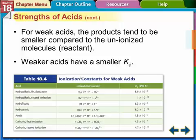So that's what I'm saying. For weak acids, the products tend to be smaller compared to the unionized molecules, the reactants. Weaker acids have a smaller Ka. So the weaker the acid, the smaller the acid constant, the ionization constant, we call it.